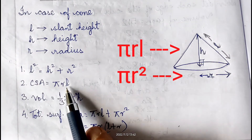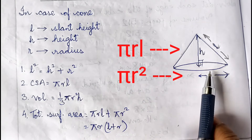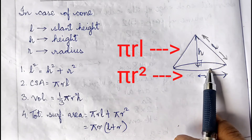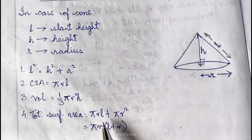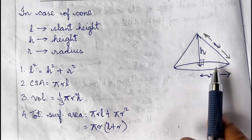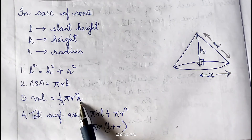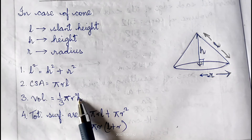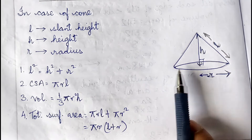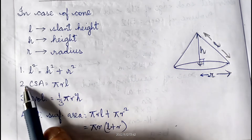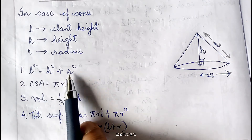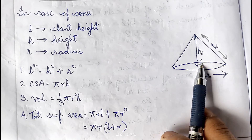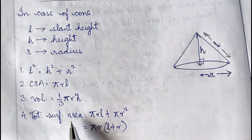The curved surface area of a cone is πrl, where l is the slant height. The total surface area is πrl + πr² = πr(l + r). The volume of a cone is (1/3)πr²h — one third of the volume of a cylinder. To calculate l, use the relation from Pythagoras theorem: l² = h² + r², since the angle between h and r is 90°.